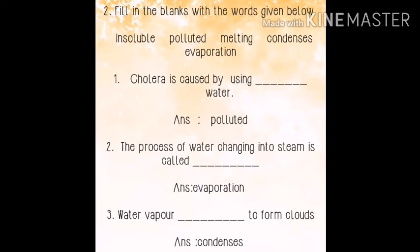Number two, the process of water changing into steam is called blank. Answer: evaporation. Number three, water vapor blank to form clouds. Answer: condenses.